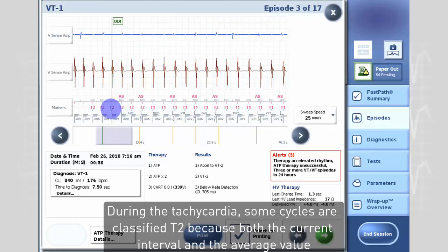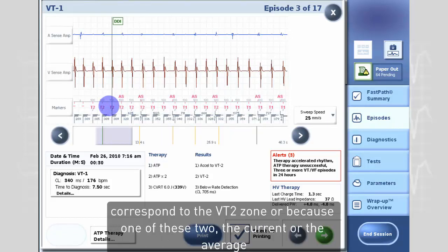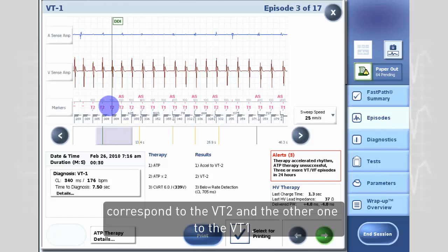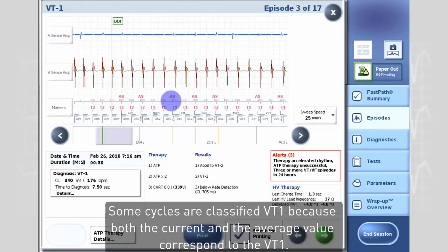During the tachycardia some cycles are classified T2 because both the current interval and the average value correspond to the VT2 zone, or because one of these two, the current or the average, correspond to the VT2 and the other one to the VT1. Some cycles are classified VT1 because both the current and the average value correspond to the VT1.